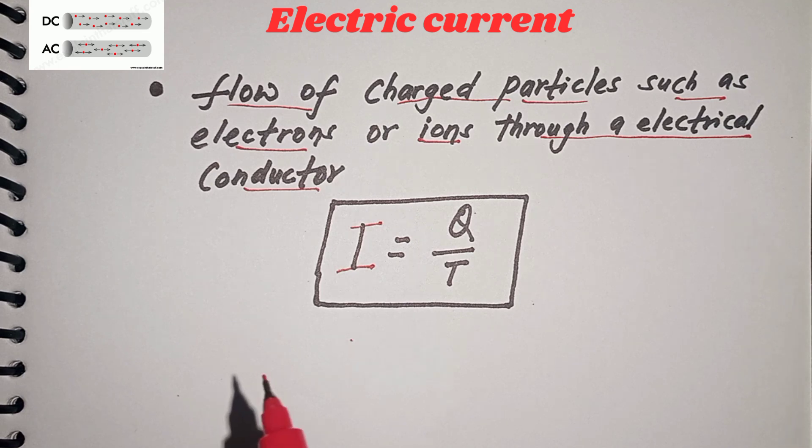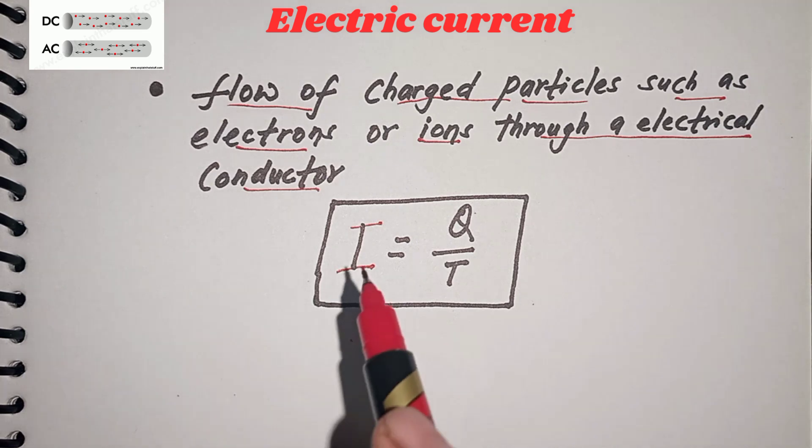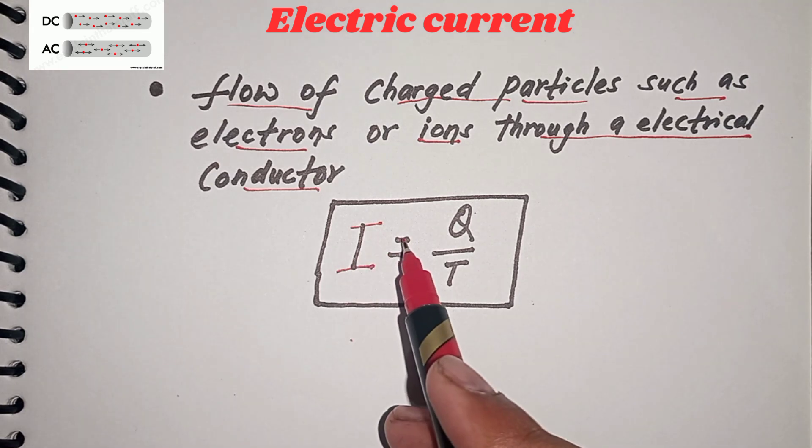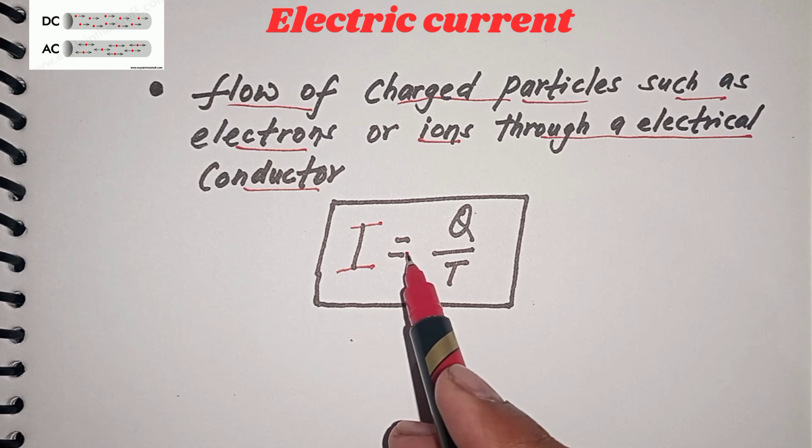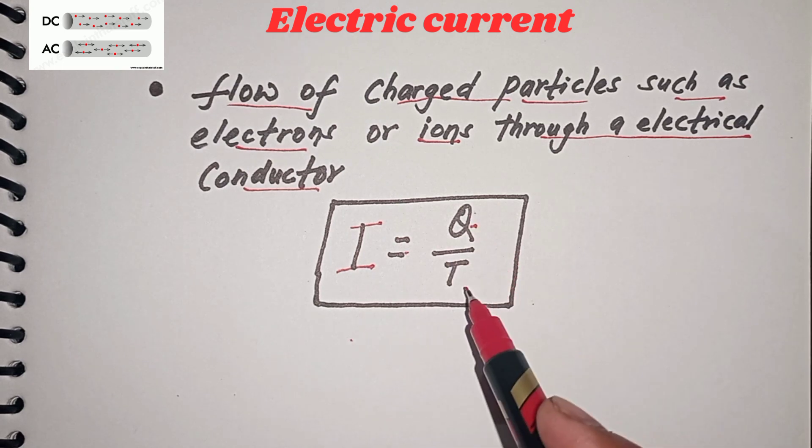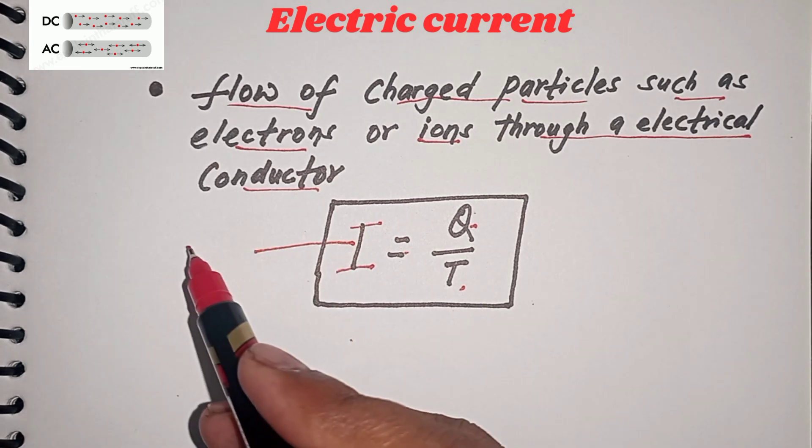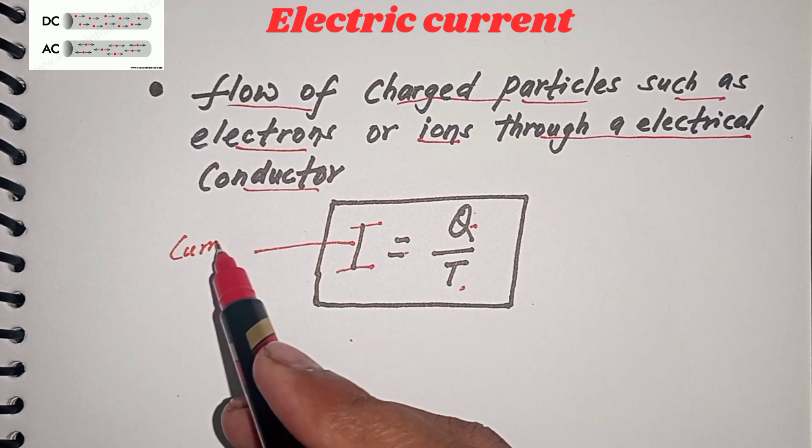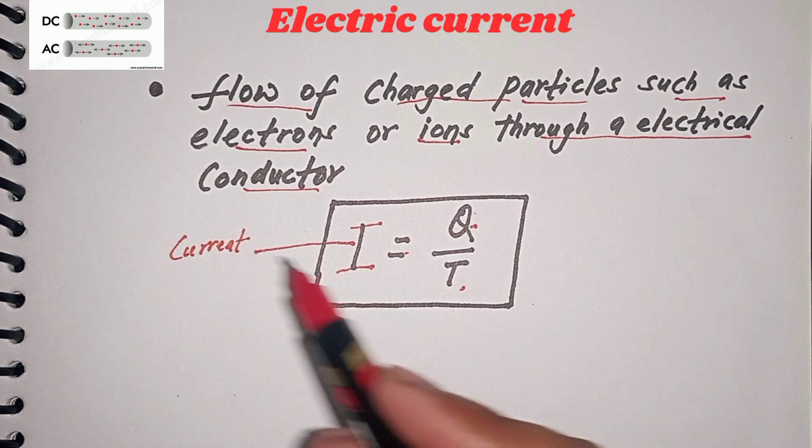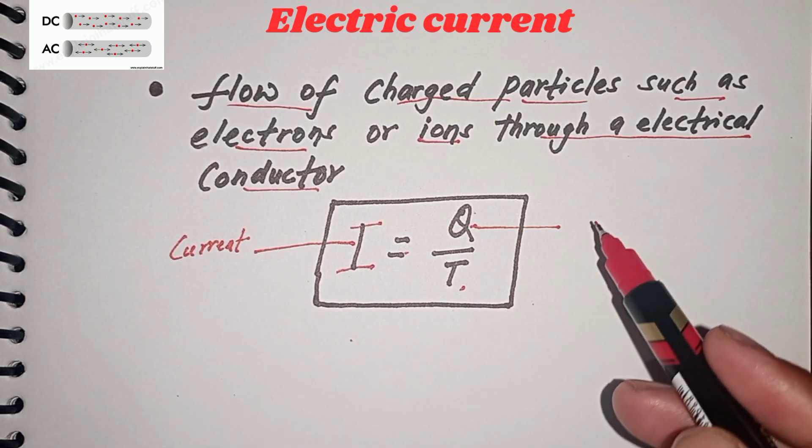for electric current is given by I = Q/T, where I refers to current, Q refers to